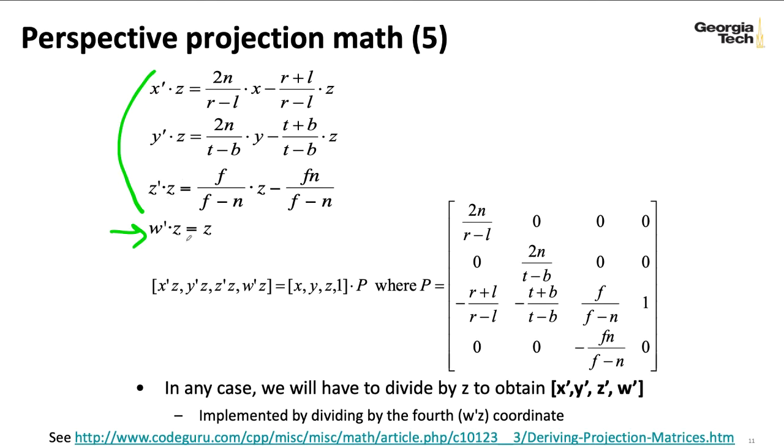So the way that's typically handled is that we'll basically take this fourth coordinate, which should be consistent, is W prime Z, and we'll stick Z there. And then somewhere on the card we'll have a piece of hardware that basically takes everything in this vector and divides it by that fourth coordinate.